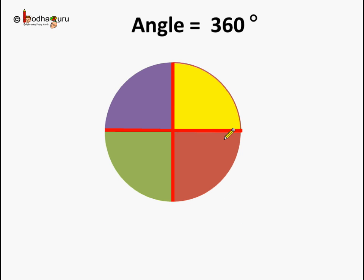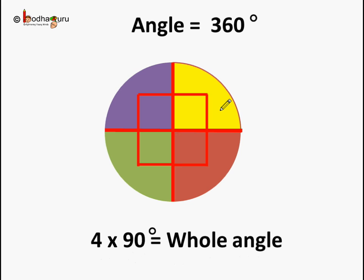Now you may ask why it is 360 degrees. Well, it is made of one right angle, two right angles, three right angles, and four right angles. Four times a right angle, which is four times 90 degrees, is equal to 360 degrees. So now you know why the whole angle is equal to 360 degrees, which is equal to four times 90 degrees.